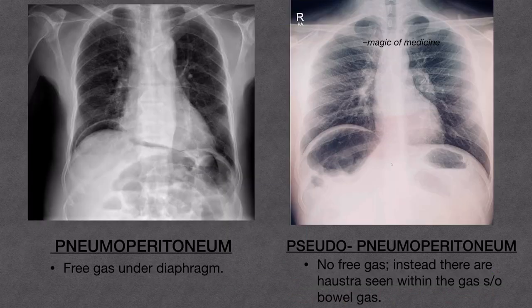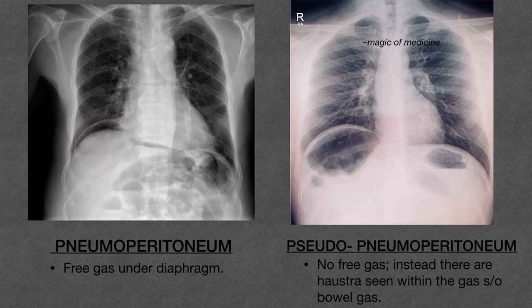Difference between pneumoperitoneum and pseudopneumoperitoneum: in pneumoperitoneum, you can see free gas under the diaphragm and the gas is clear with no haustrations — diagnose it as pneumoperitoneum. While in the second case, you can see tiny haustrations within the gas, suggestive of bowel or colonic gas — hence this is Chilaiditi or pseudopneumoperitoneum.